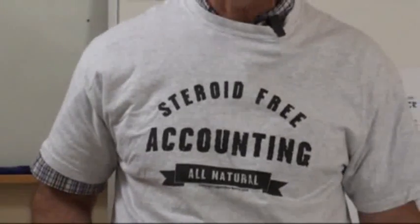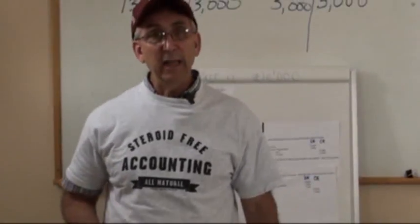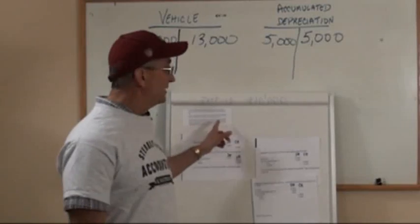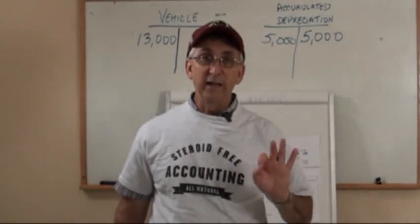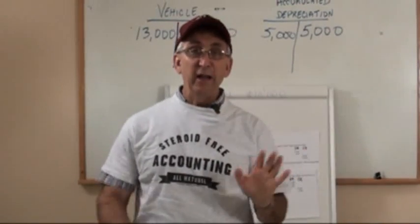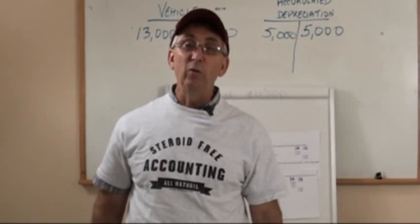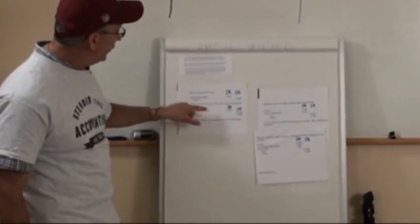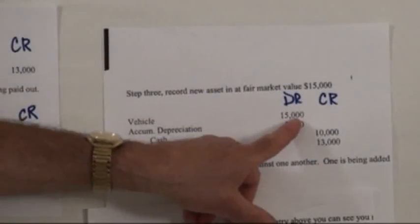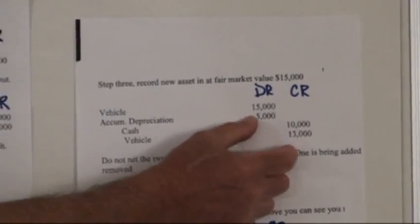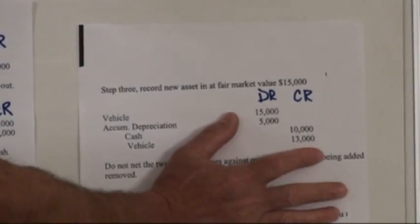Step three is to record the new asset in at its fair market value. You'll either be told the new asset is worth $15,000, or as the written analysis explains: if the car you're trading in is worth $5,000 and they want another $10,000, that means the new asset is worth $15,000. We'll now add to the entry the new vehicle by debiting it for $15,000. Now we've recorded the new asset, removed the old asset and its accumulated depreciation, and we have the cash.